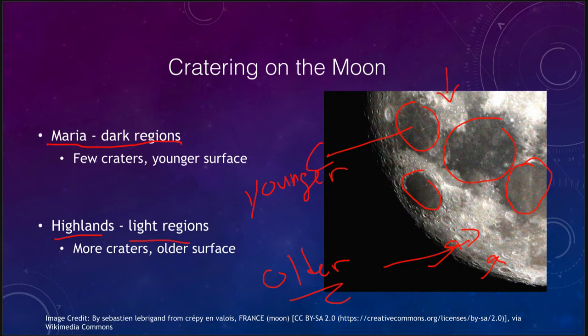If we were to actually do crater counts — how many craters there are per square kilometer — we could actually determine relatively how old the various sections are. However, to get actual ages we really need a sample of rock from the surface. We can tell which areas are younger or older, and we can even compare that among different objects — comparing the moon to the Earth, or comparing Mars, Mercury, and Venus to get ages for them as well.